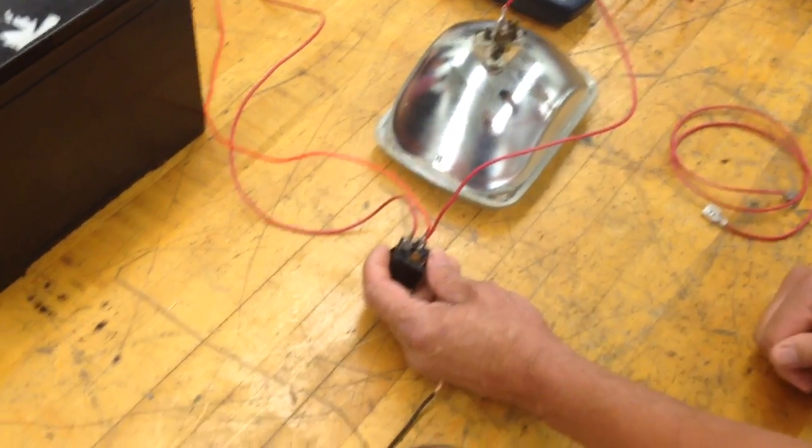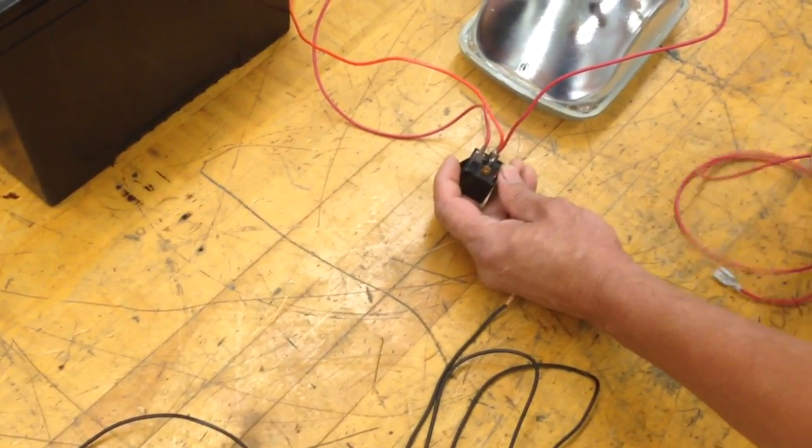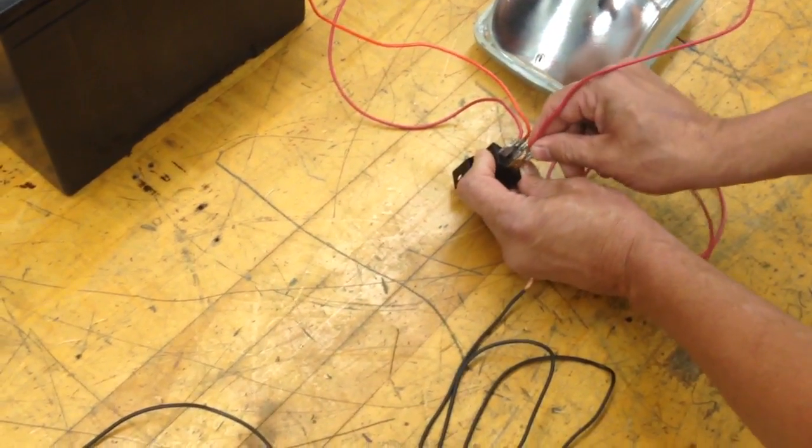Next, we're going to go from pin 87 on the relay to the high beam on the headlight.